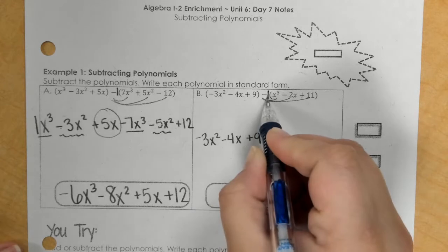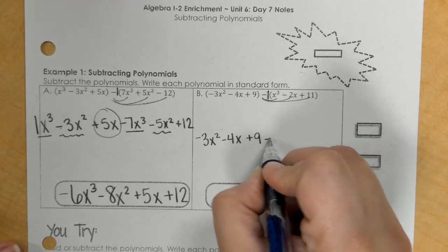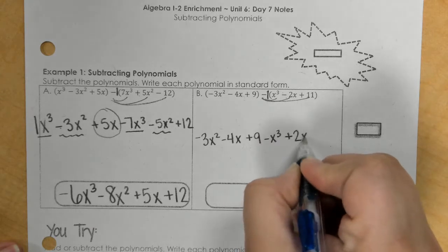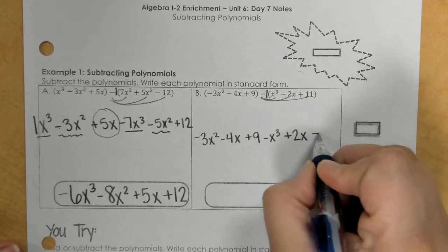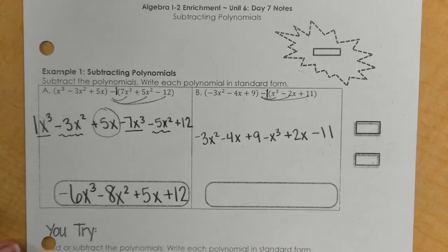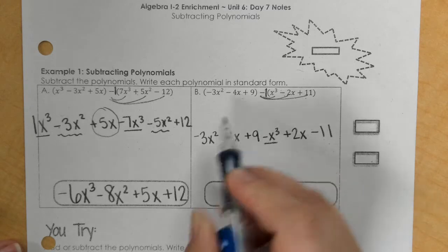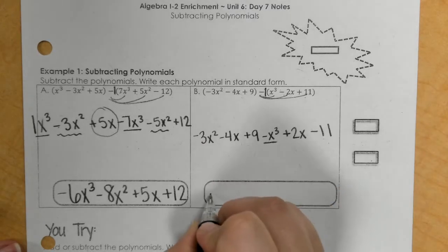And the second one becomes a negative x to the third, a positive 2x, and a negative 11. Alright, so here, my highest exponent is a negative x to the third, and there's nothing else that has an exponent of 3.